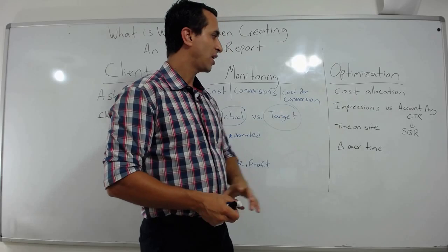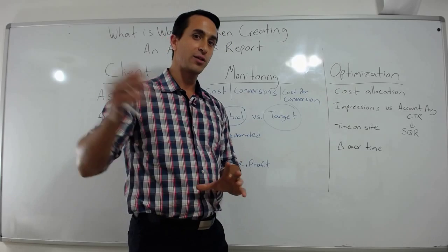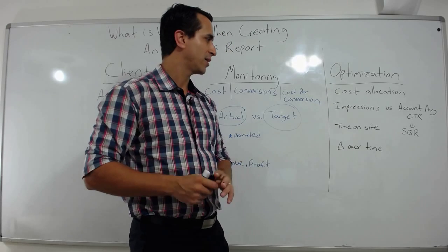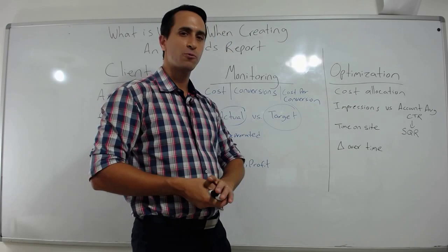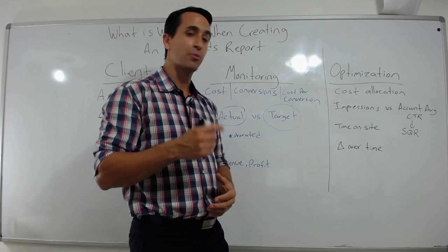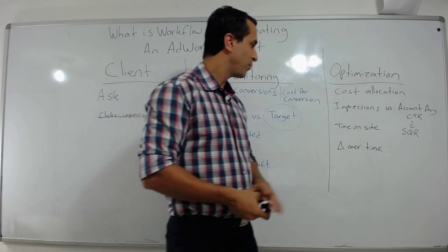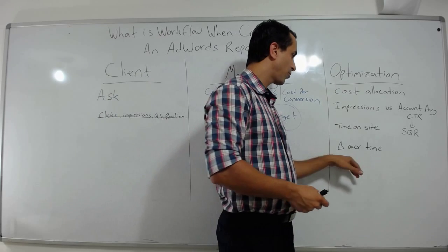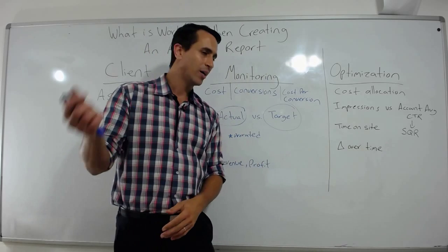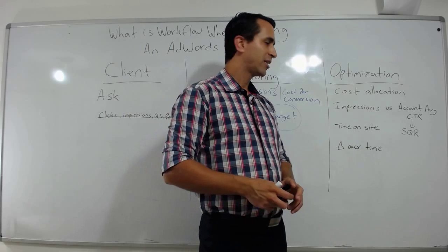The next thing to look at is time on site. Always have your account linked to Google Analytics. Look at what keywords are driving great time on site, look for trends, look for opportunities, and improve. You can also take these reports and look at them over time — for example, quality score over time with a weighted average. There are a lot of different things there.